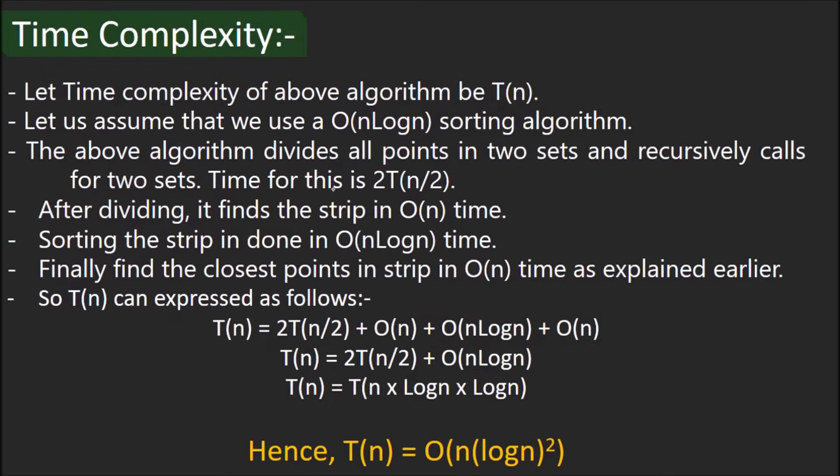Time Complexity. Let T(n) denote the time complexity of the algorithm. Sorting is done in O(n log n). Even though we've used quicksort in our case, which may have a complexity O(n²) in the worst case, but that can be reduced to O(n log n) using merge sort. The dividing strip divides the plane into two parts recursively. So, that will be represented by 2T(n/2). We find the strip in linear time. Again, the sorting is done in O(n log n) and the closest pair in the strip is found in O(n). So, T(n) can be represented as the sum of the following terms. This is equivalent to T(n) = 2T(n/2) + O(n log n), thus giving us the complexity O(n log n log n). Hence, T(n) = O(n(log n)²).